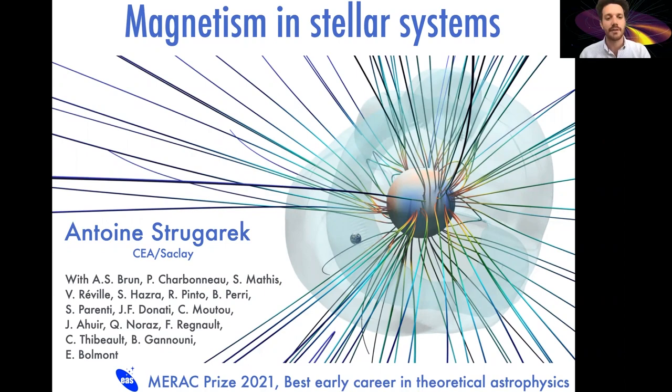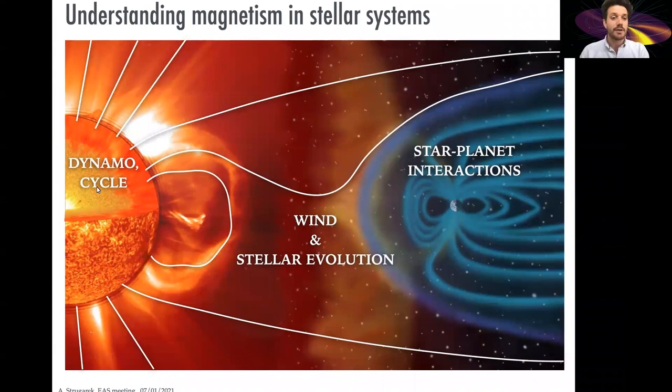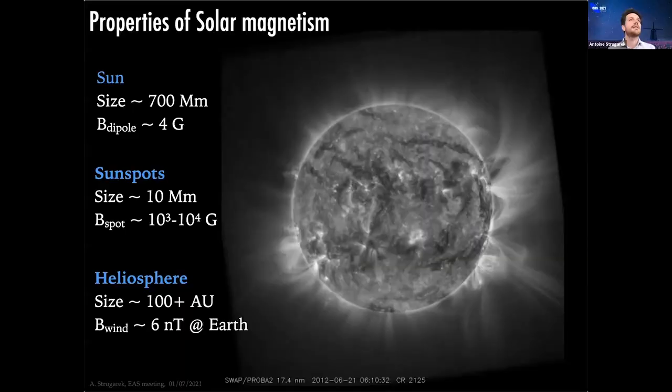I'm going to present some work I did on magnetism in stellar systems with colleagues. I will focus first on dynamo action inside stars and how we can sustain or not a cycle, then move to how magnetism sculpts the corona and wind of a star and affects stellar evolution, and finally how it can lead to very interesting star-planet magnetic interactions.